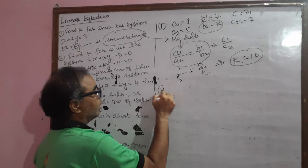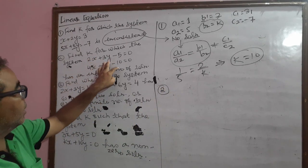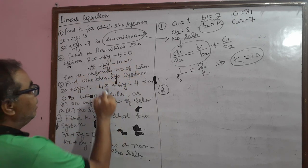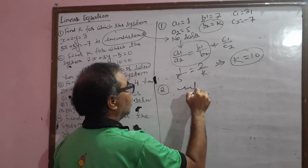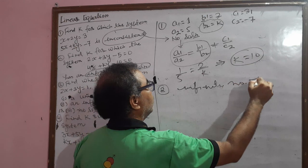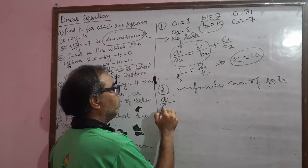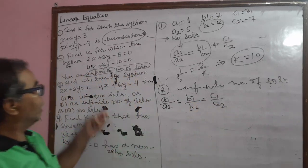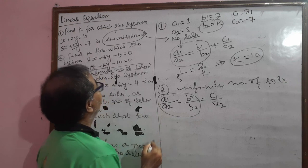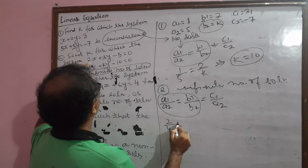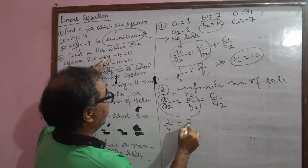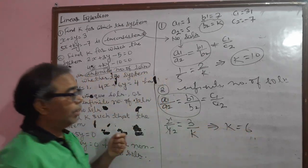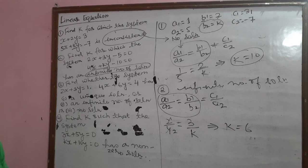The second question: find k for which the system 2x plus 3y minus 5 equal to 0 and 4x plus ky equal to 0 has an infinite number of solutions. For infinite number of solutions, the condition is a1 by a2 equal to b1 by b2 equal to c1 by c2. In place of a1 we write 2, a2 is 4, so 2 by 4. In place of b1 is 3 and b2 is k. Cross-multiplying gives us the value of k.